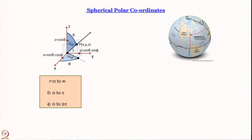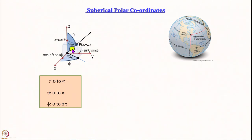Another thing we need to use is spherical polar coordinates — a departure from the Cartesian x, y, z coordinates we have been using. Since we are talking about rotation, which is essentially a change of angle, it is more convenient to describe the same 3-dimensional space using r, theta, and phi. Please look at this diagram: I have drawn the three Cartesian axes x, y, and z, and we will now define the three coordinates r, theta, and phi.